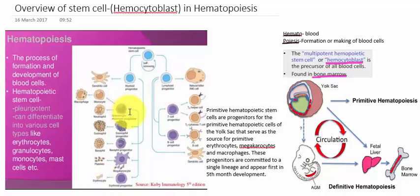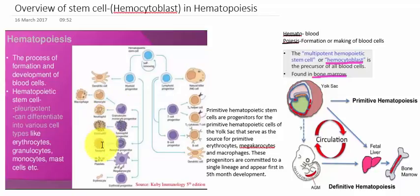The myeloid progenitor also forms WBCs, particularly the granulocytes — neutrophils, eosinophils, and basophils — as well as platelets, which help in blood clotting.